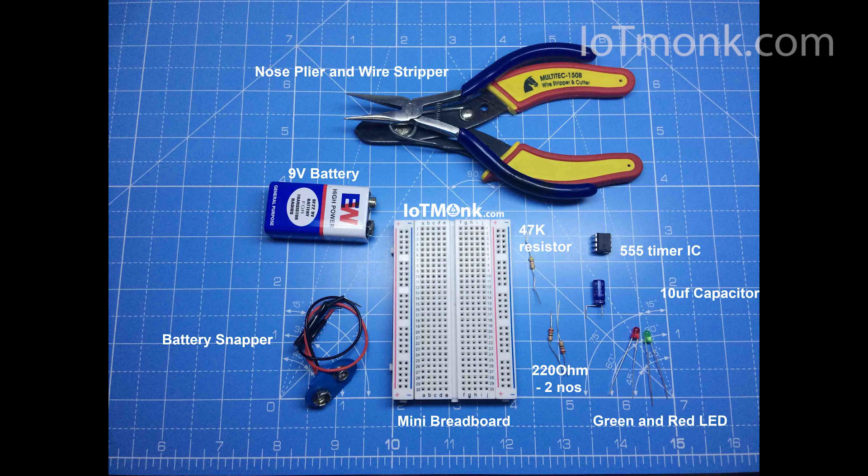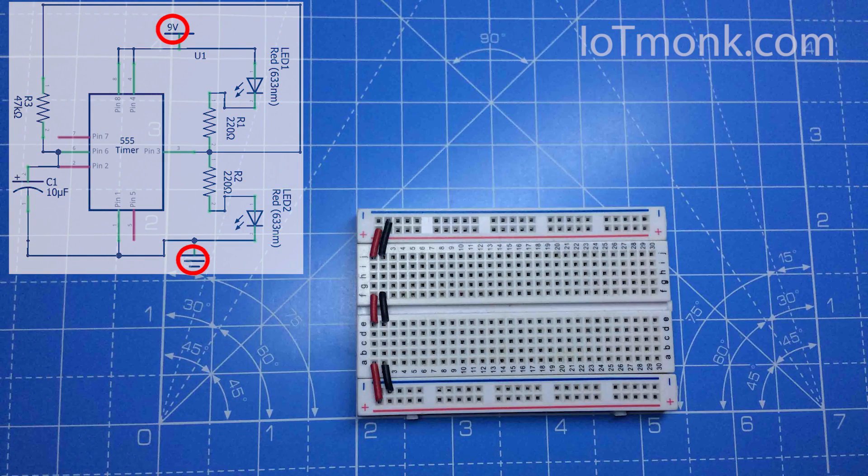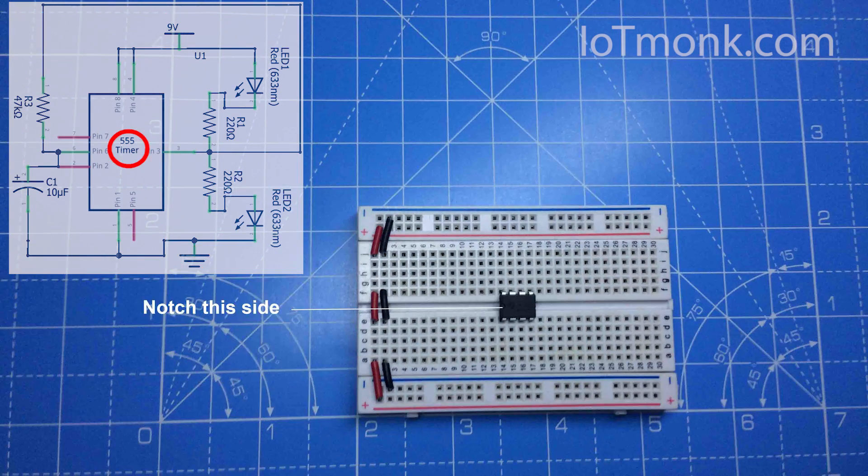In the first stage, as usual, we will connect the power rails. We are doing this so we want to circulate the power supply all across the breadboard. Then place a 555 timer IC and make sure that the notch is on the upper side.